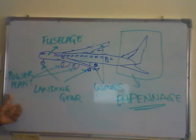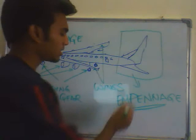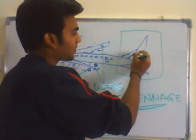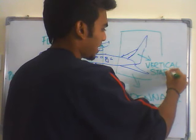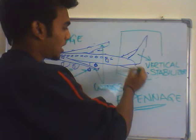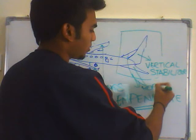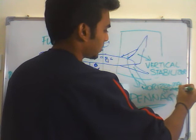Now, those are the general parts of the aircraft. The empennage consists of two parts. The tall fin-like thing is called the vertical stabilizer, and the other two are called the horizontal stabilizer. The vertical stabilizer and horizontal stabilizer make up the empennage.